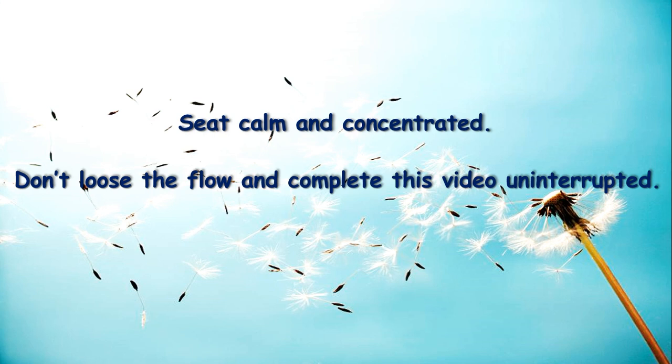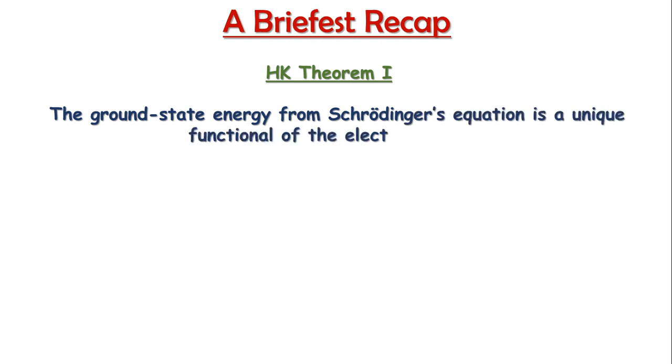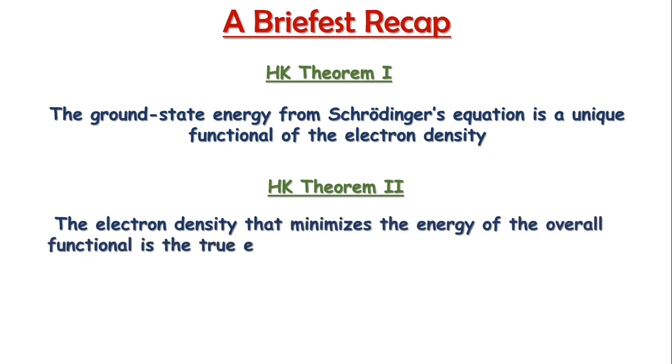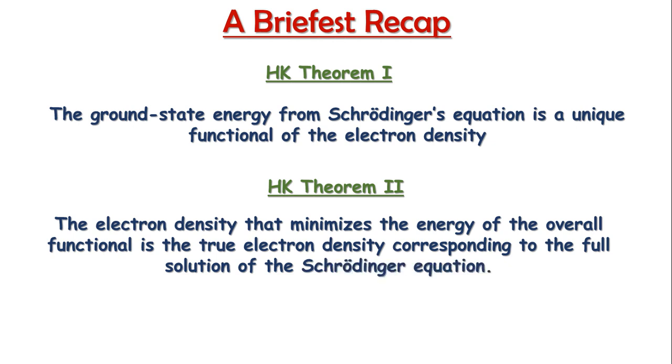Now just a brief recap. In the previous lecture we had seen the Hohenberg-Kohn theorems. The first HK theorem says the ground state energy from Schrödinger equation is a unique functional of the electron density. The second theorem says the electron density that minimizes the energy of the overall functional is the electron density you should use.